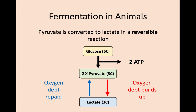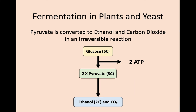As discussed in the previous key area, this is an example of a reversible reaction — so if oxygen were to become available, this lactate could be converted back to pyruvate, and aerobic respiration could continue as normal. Plants and yeast are slightly different. In the absence of oxygen, again glycolysis takes place with two molecules of ATP produced, but this time the pyruvate is converted into ethanol and carbon dioxide. This is an irreversible reaction, meaning that even if oxygen became available, ethanol and carbon dioxide could not be converted back to pyruvate. The main takeaway is that fermentation is less efficient than aerobic respiration.